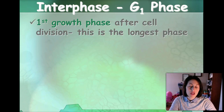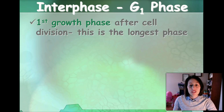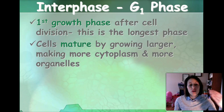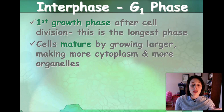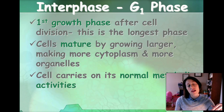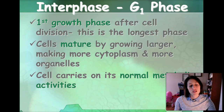So what exactly happens in interphase? G1 is the first growth phase, and this is after cell division — it's the longest phase that the cell will spend within its lifetime. The cells mature, so they're going to start growing larger. They're going to make more cytoplasm and more organelles, so they can fit the function for the size of the cell as it grows. And here's where it's going to carry on its normal metabolic activities.